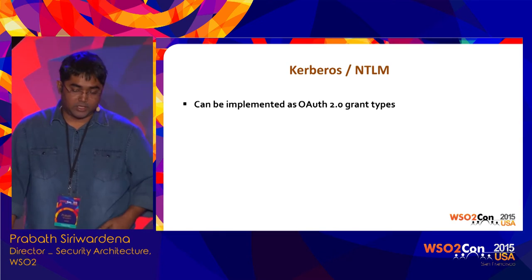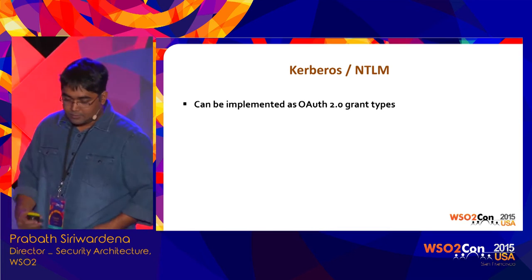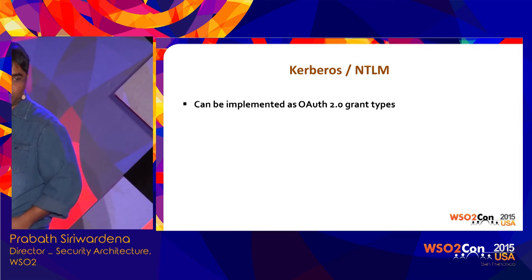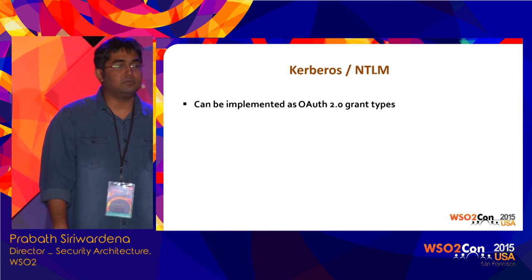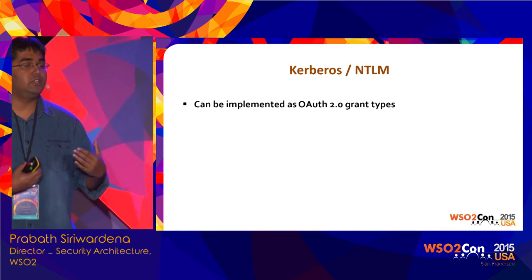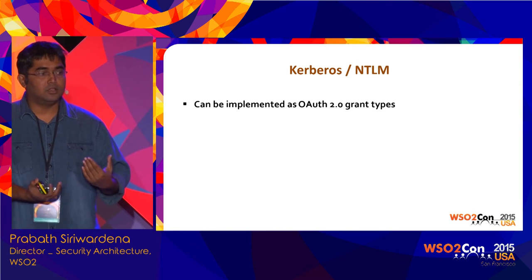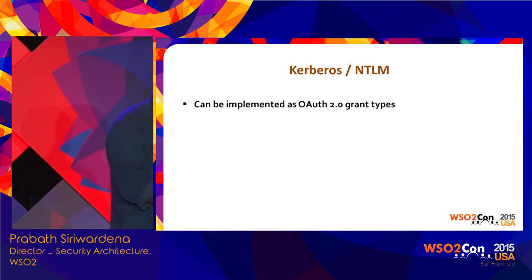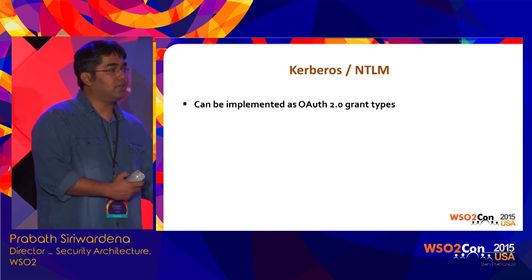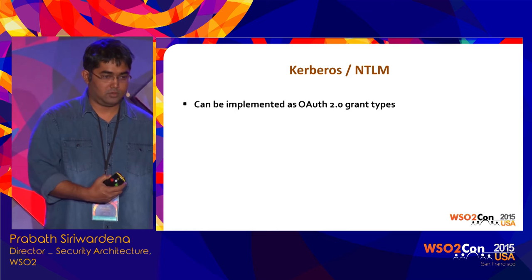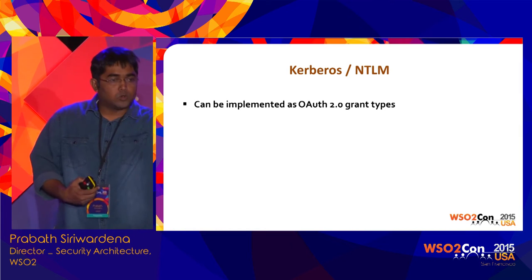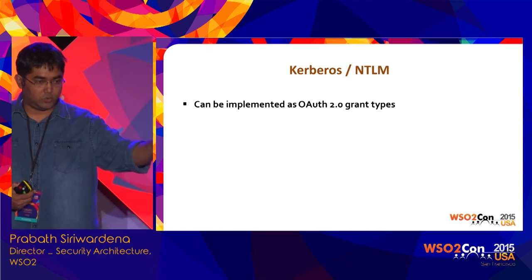Regarding access tokens: out of the box, when we issue an access token it's an arbitrary random string that represents the application and also the end user who gives consent to access their resources on their behalf. This access token is opaque to the client — the client should not try to understand what's in the access token. You simply pass the access token along the API request, it hits the gateway, and the gateway talks to the key manager to validate the access token.